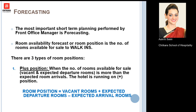The most important short-term planning that the front office manager can do is forecasting. The room availability forecast, or room position, is basically knowing the number of rooms that we can sell to walk-ins — guests who have not made any prior reservation. Depending upon the room positions, we have three major positions: the plus position, the minus position, and the neutral position.